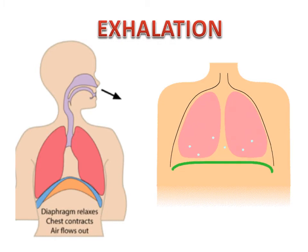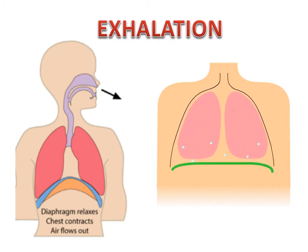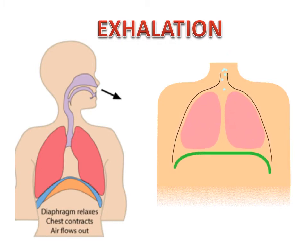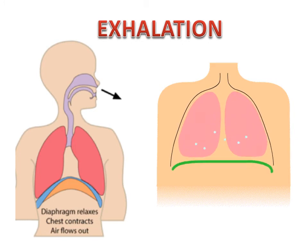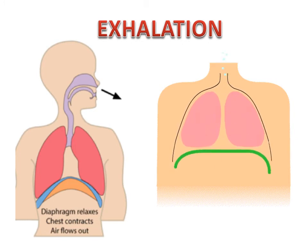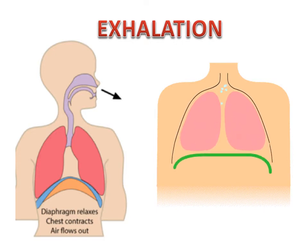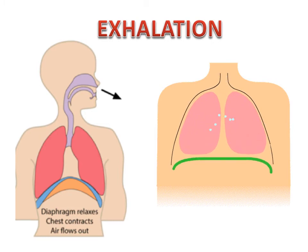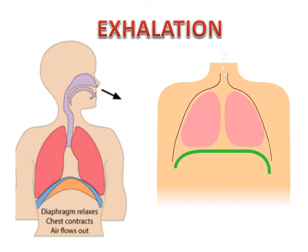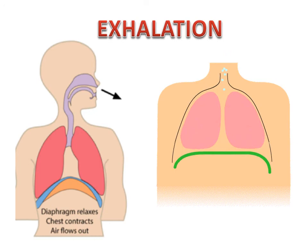When you breathe out or exhale, the diaphragm relaxes. The diaphragm and ribs return to their original place. The chest cavity returns to its original size. There is now less space and more air pressure inside the lungs, which pushes the air to the outside where there is a lower air pressure.